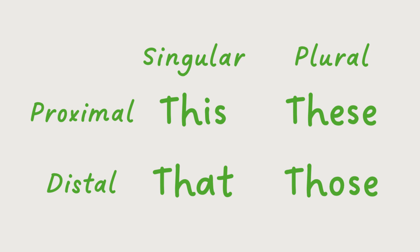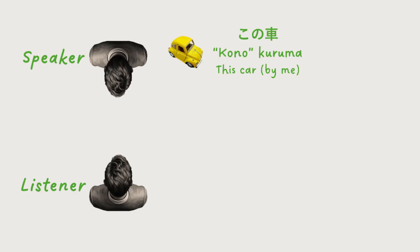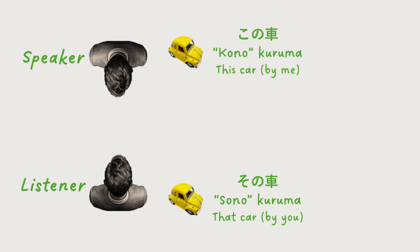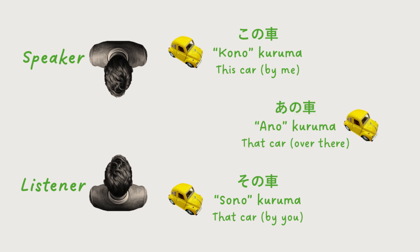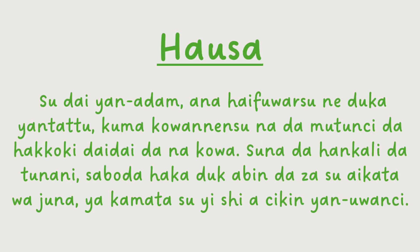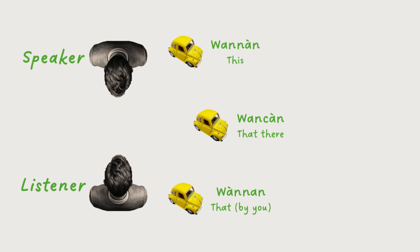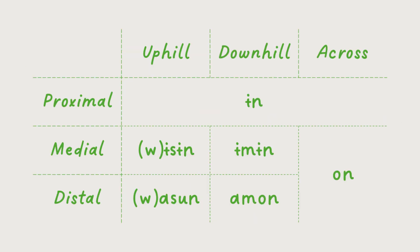Other languages make different distinctions. In Japanese, there are separate demonstratives for objects close to the speaker, objects close to the listener, and objects far away from both of them. Hausa adds an extra layer, using the same three as Japanese, but having an extra distinction for objects very far away from both people. Yupno demonstratives don't contrast number, but do make a three-way distinction in proximity. On top of this, medial and distal demonstratives distinguish whether what they're referring to is uphill, downhill, or across the hill.